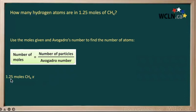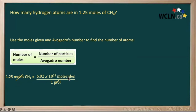So we have 1.25 moles of our methane. We multiply that by Avogadro's number. Notice that our mole units will cancel out, which means we've now calculated the number of molecules of methane we have. But let's be careful — we want to know the number of atoms of hydrogen, and in a molecule of methane, we have four atoms of hydrogen.